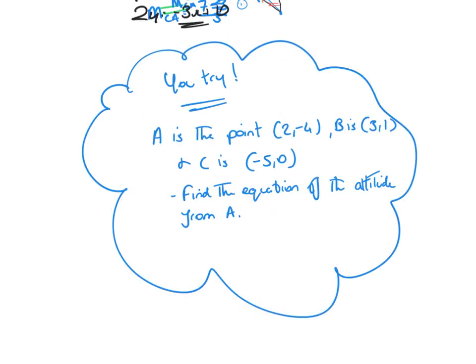Now you try. A is the point (2, -4), B is (3, 1), and C is (-5, 0). Sketch that out and draw an altitude from point A — you could call it AD — and find the equation of that altitude from A.